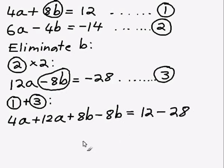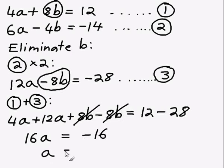So now I can simplify this. So 4a plus 12a is going to equal 16a. Now, positive 8b and negative 8b are going to cancel out, so I'm just going to have no b's left. The other side, I've got 12 minus 28, which becomes negative 16. So if 16a equals negative 16, a must equal negative 1. So I've already found out one of my variables, a equals negative 1.